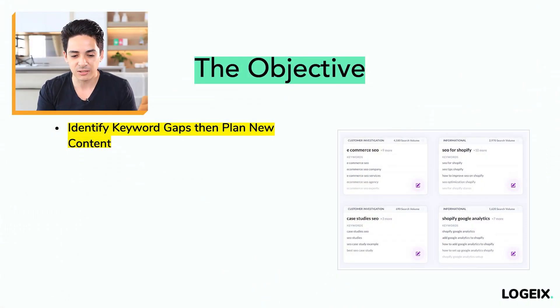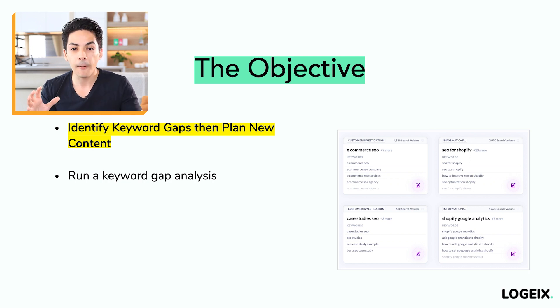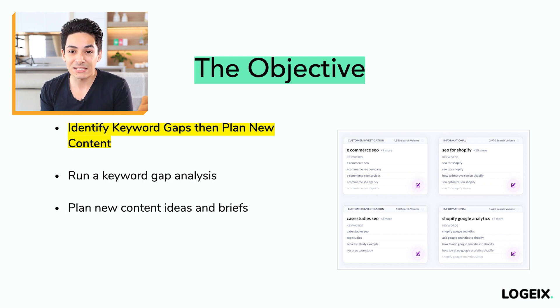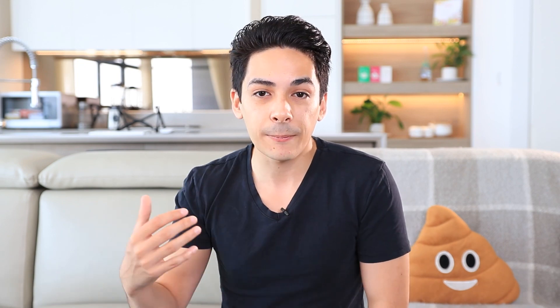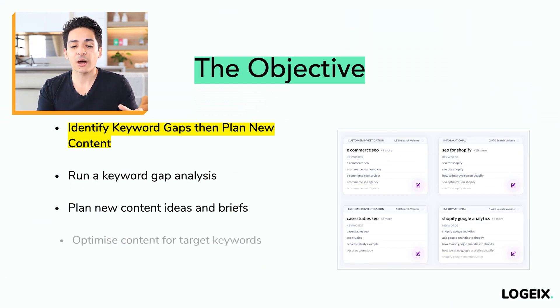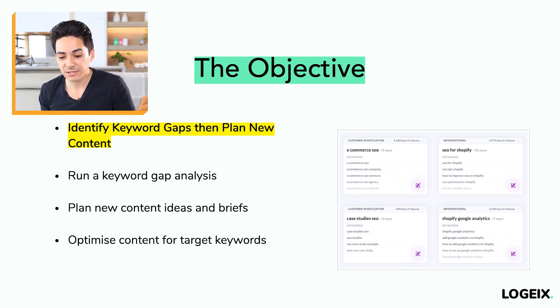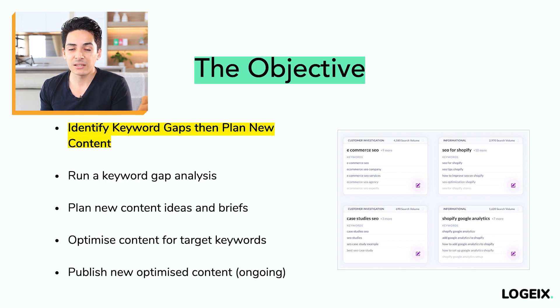From there, you plan the content. Run a keyword gap analysis using tools like Surfer and SEMrush — a combination of both is recommended. This gives you keywords and topics you're not currently focused on. Then plan new content ideas based on that and write out detailed briefs: what the content will be about, which keywords will be included, and a full detailed brief for how to write it. Optimize your content for target keywords during or after writing, and do this on an ongoing basis. Publish new content every single month — consistent, regular content is definitely beneficial.